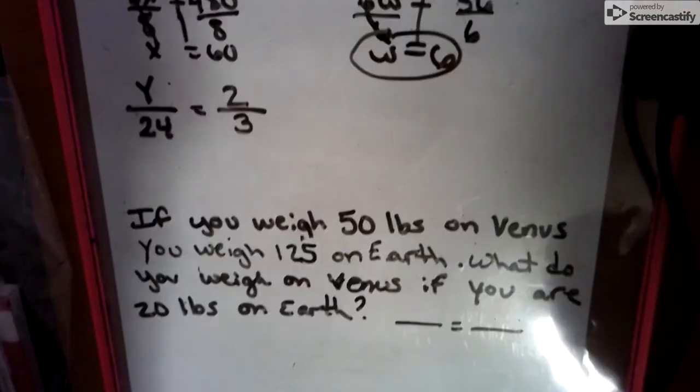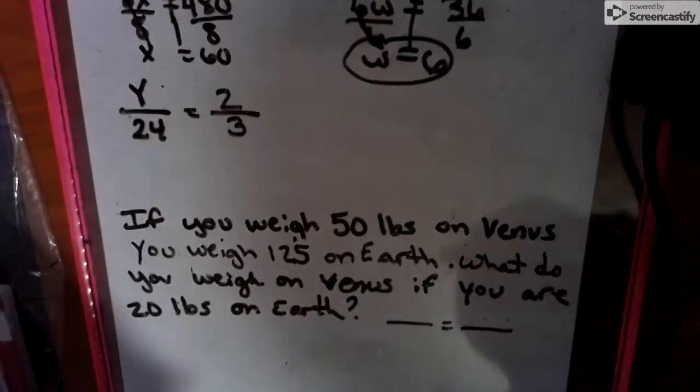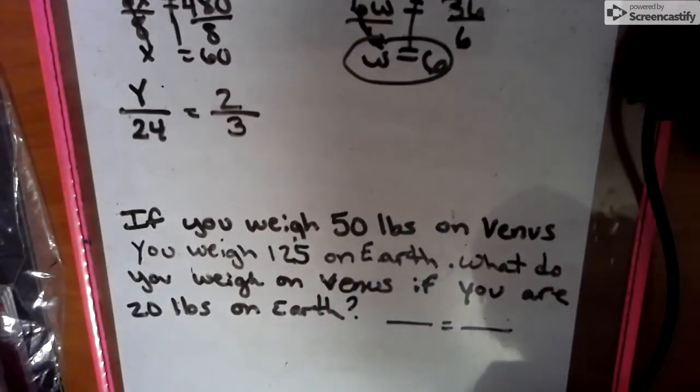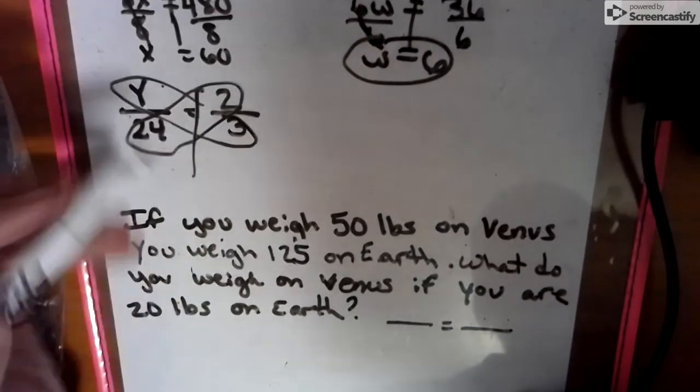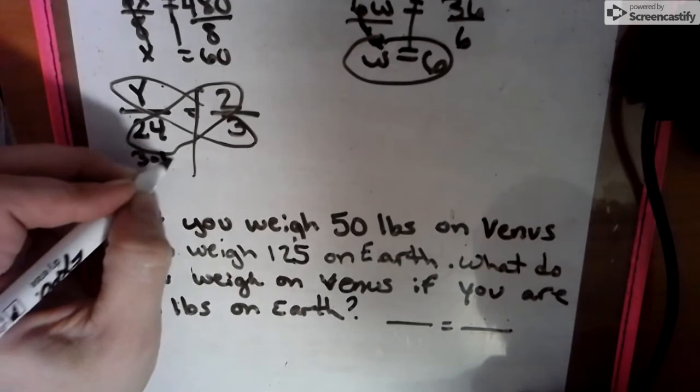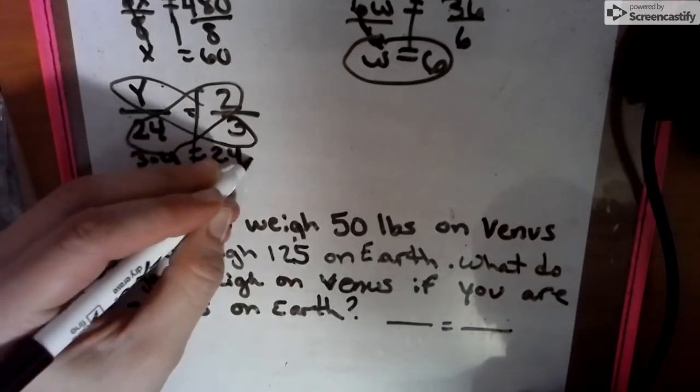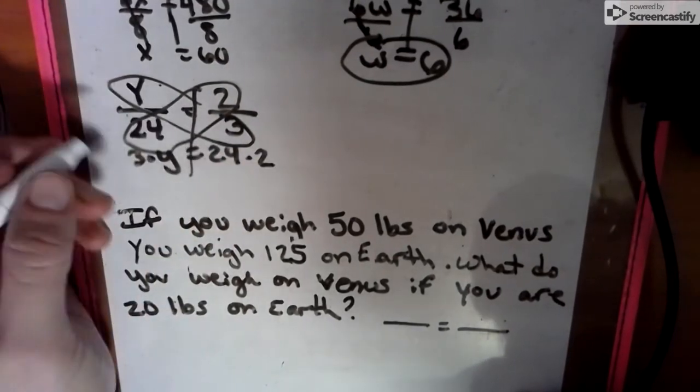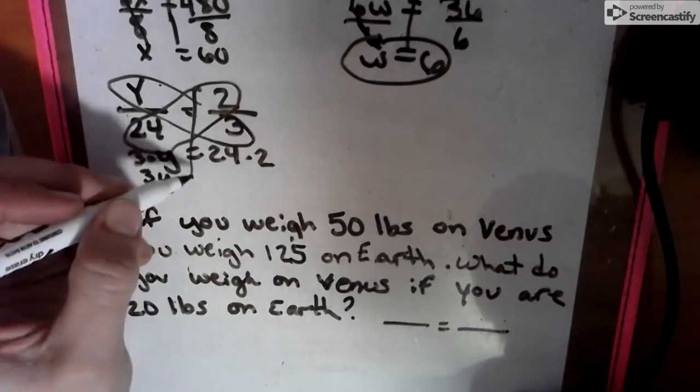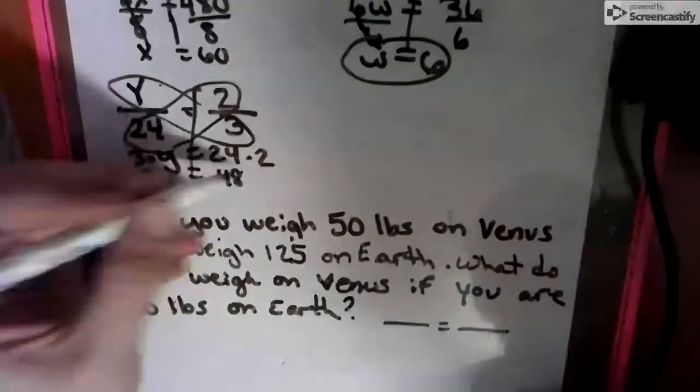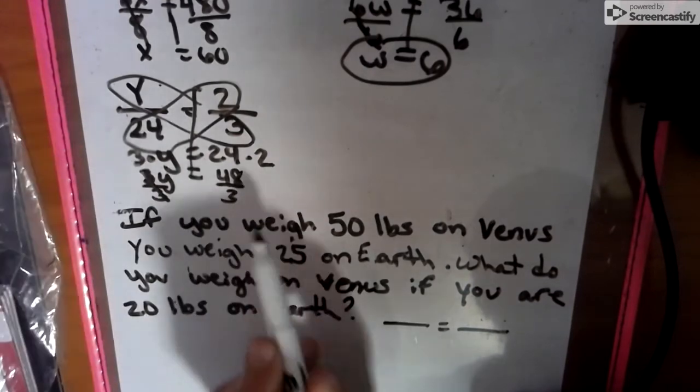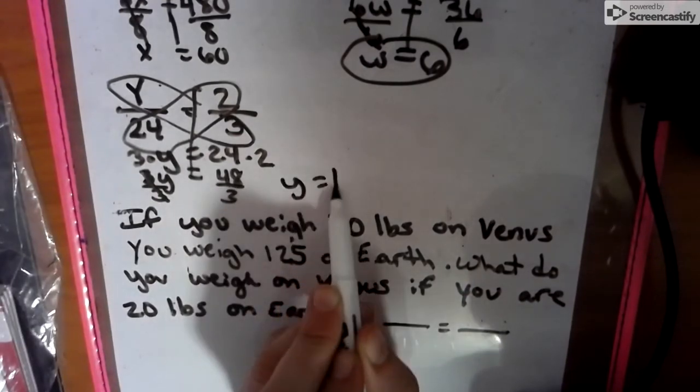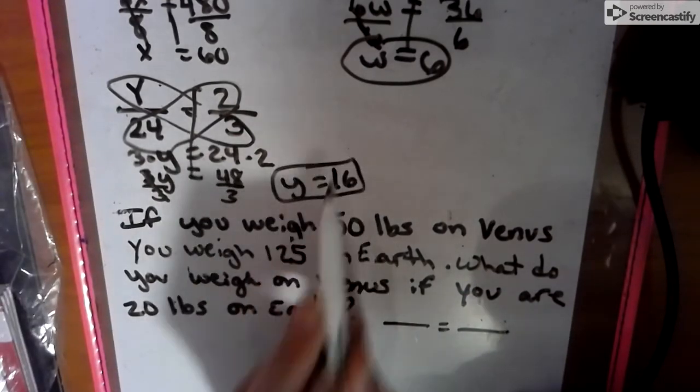Moving down to another option. Okay. So we have one more here. We're going to take our diagonals. And we have 3 times Y equals 24 times 2. Both diagonals. Shove them together. 3Y equals 48. Divide by 3. Divide by 3. And we get Y equals 16. That's that one.